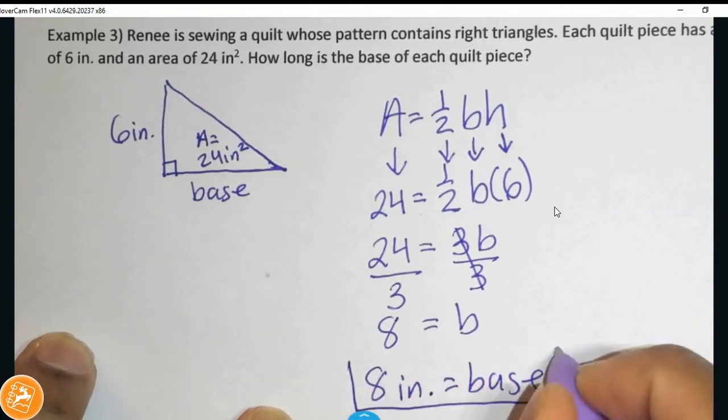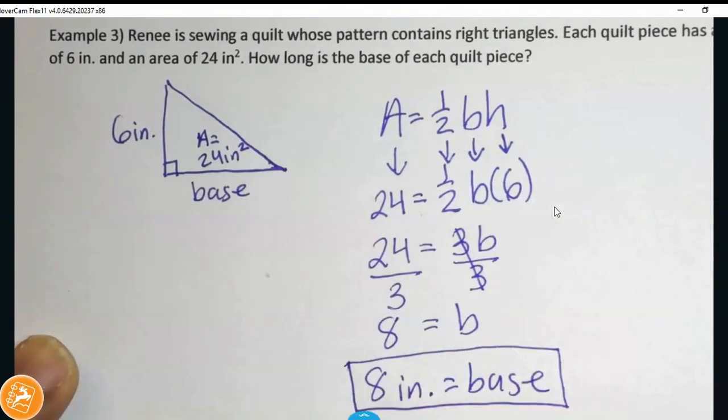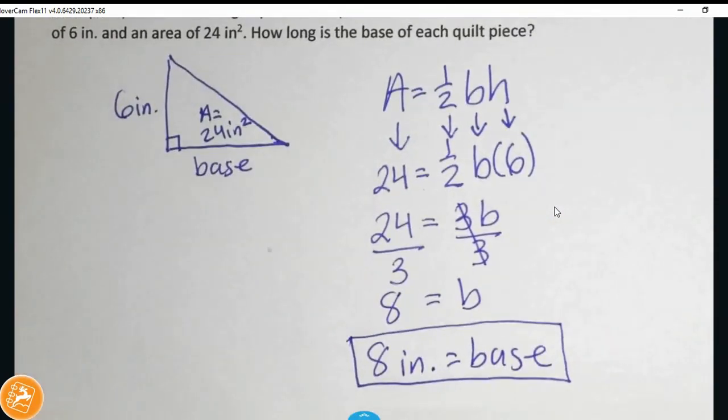So, the base is 8. So, I look and see if I answered my question, and I did. How long is the base of each quilt piece? The length is 8 inches.